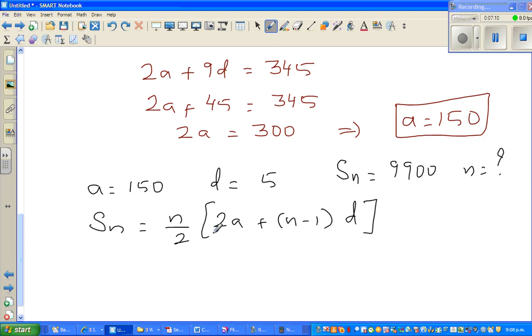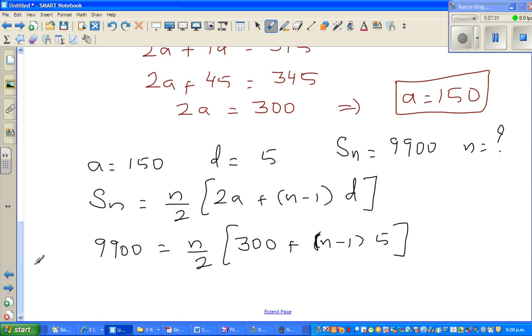In place of Sn I can put 9900. So 9900 equals n over 2 times (2a, where a is 150 so 2a becomes 300, plus (n minus 1) times d which is 5). If I multiply both sides by 2 to get rid of the denominator, the 2s cancel.